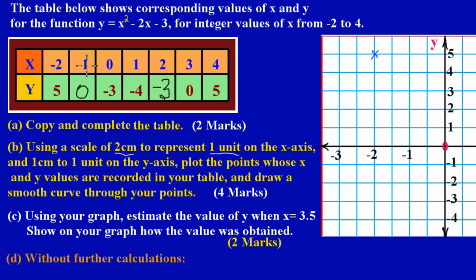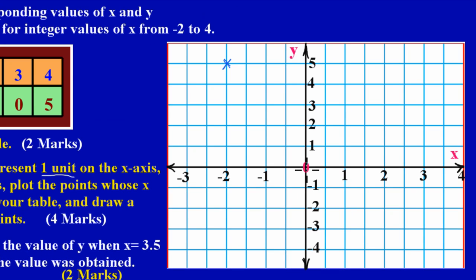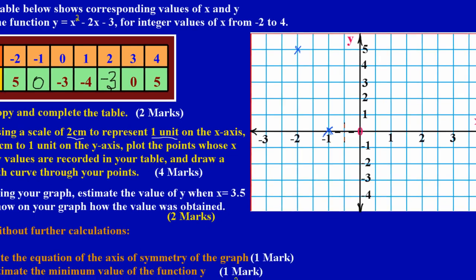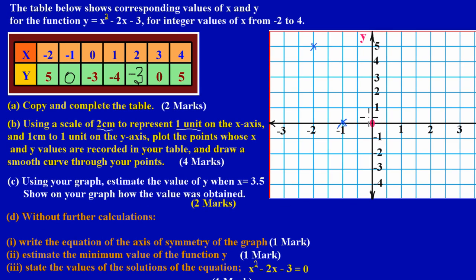Next I'm looking for the coordinate when x is negative one and y is zero. Starting at the origin, x is negative one so I move to the left on the x-axis. The y value is zero, meaning there is no movement on y. Since there's no movement on y, I stop right at negative one on the x-axis — that's the coordinate for that pair.